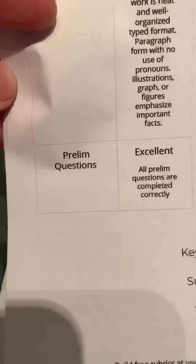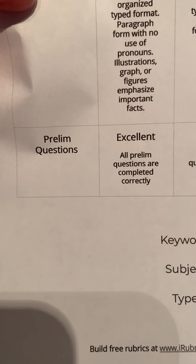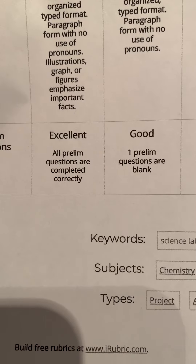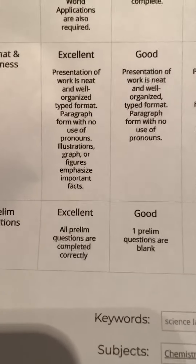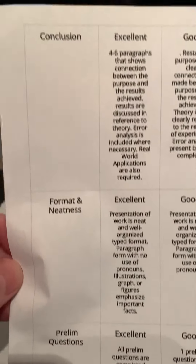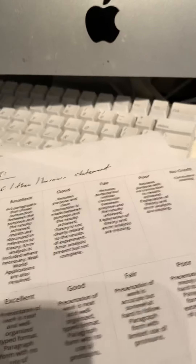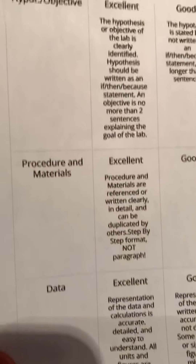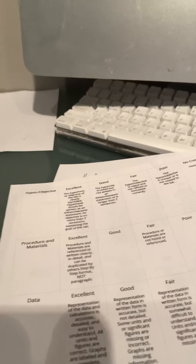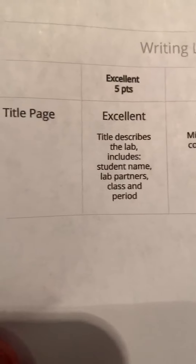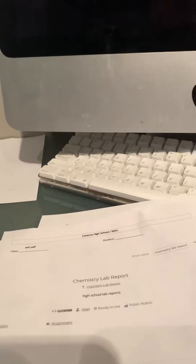And then finally there are the prelim questions. All prelim questions are completed correctly. For 'good,' you might leave one blank. For 'fair,' you're leaving two blank. For 'poor,' three blank. And any more than that would receive no credit. This is an updated rubric for you, and I encourage you to go back and look at it. Take time to reference that — everything we need in our lab reports is there, and it's spelled out pretty clearly exactly what it is I'm looking for.